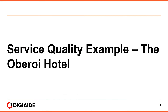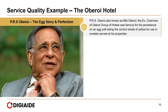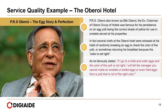Moving on to examples of service quality — the Oberoi Hotel. PRS Oberoi, also known as Bicky Oberoi, the ex-chairman of the Oberoi Group of Hotels, was famous for his persistence on an egg yolk being the correct shade of yellow for use in omelettes served at his properties. Several chefs at the Oberoi Hotel were stressed by his habit of randomly breaking an egg to check the colour of the yolk, or sometimes returning his breakfast because the colour was not right. As he famously stated, if I go to a hotel and order eggs and the colour of the yolk is not right, you cannot make an omelette, boiled eggs or even fried eggs from a yolk that is not the right colour.